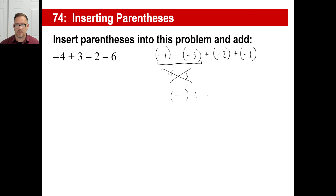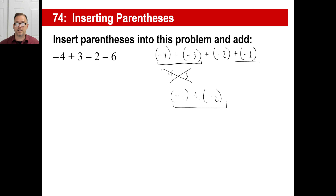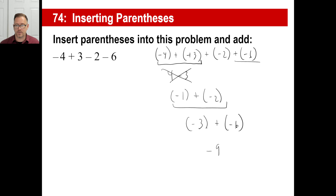So now I have negative one plus negative two. Those are the same sign, so we take the absolute values, one and two, and add them — that's a three — and we take the same sign, so that's a negative three. Now we have negative three plus negative six, same thing — both negative, so you add the absolute values. Three plus six is nine, and the answer is negative nine because both of those are negative. And that's all there is to it.